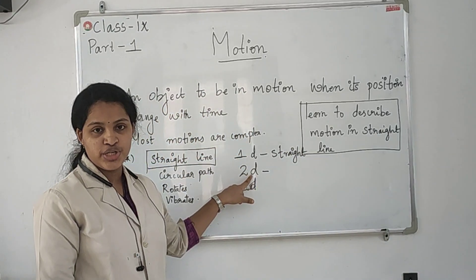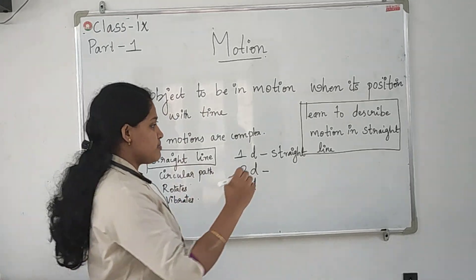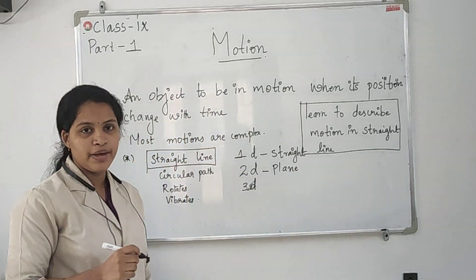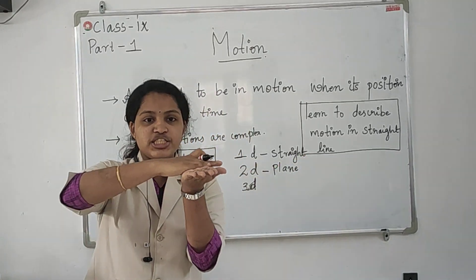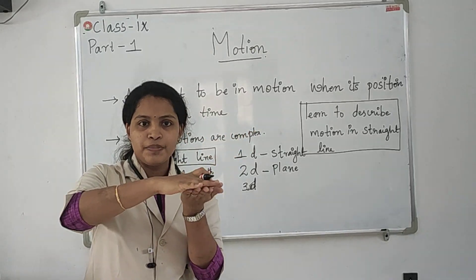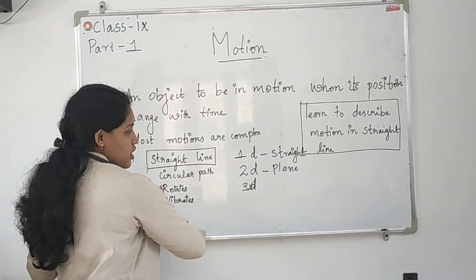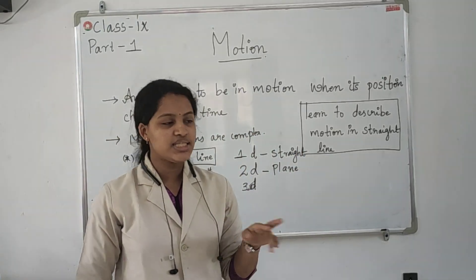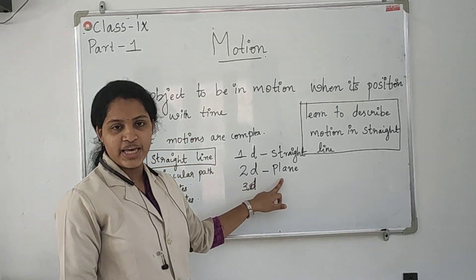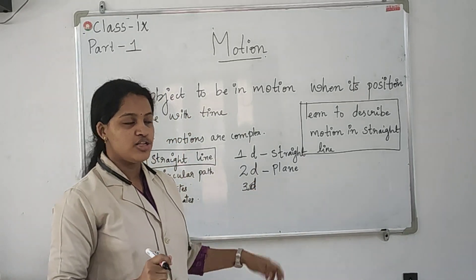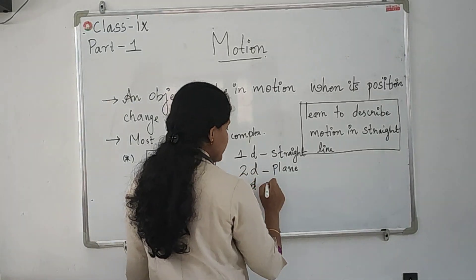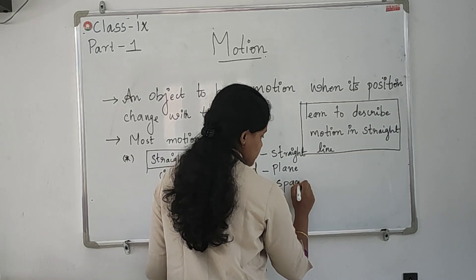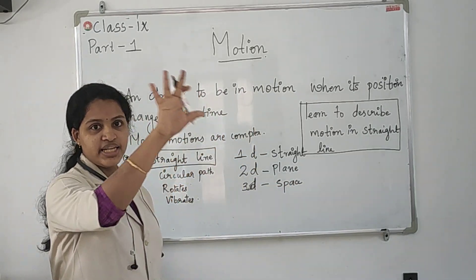Two-dimensional motion means motion along a plane. The surface of my palm, the surface of this whiteboard, the table top, and the floor — all these are examples of a plane. Three-dimensional motion is the motion in space, that is, in air.